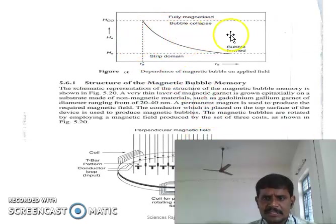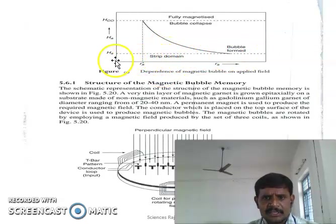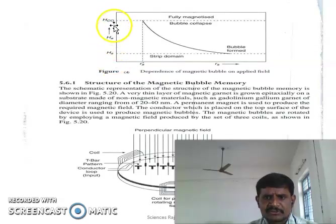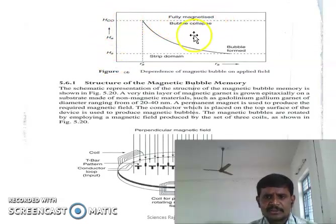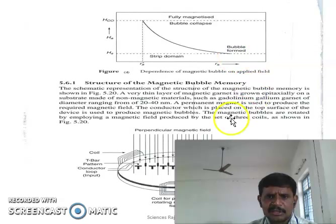In this graph, we are going to look at the strip domain. We can see it increases up to a maximum value. At the maximum value, the domains will collapse and they form waveforms.